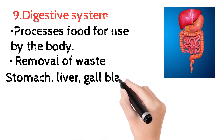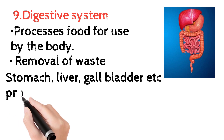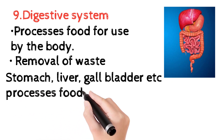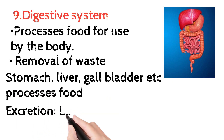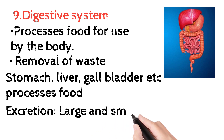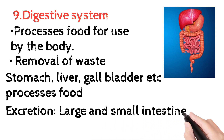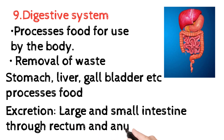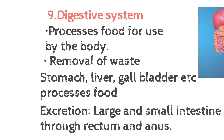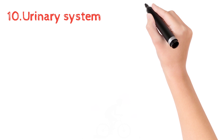The stomach, liver, gallbladder, and related parts are involved in the processing of food. Undigested waste material is removed through the large intestine and small intestine and excreted out. Next is the urinary system.